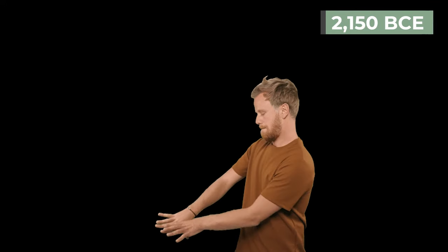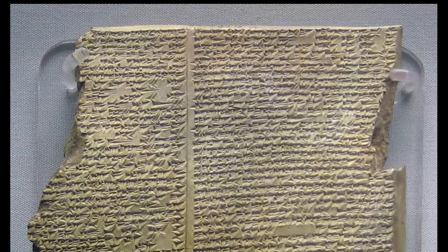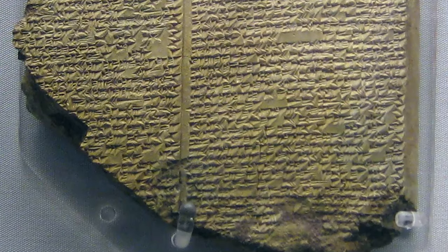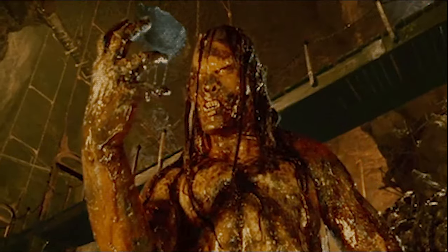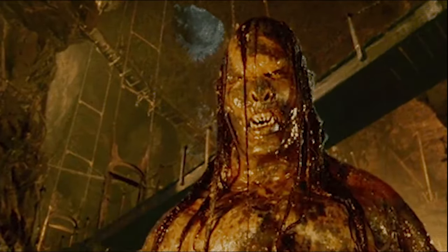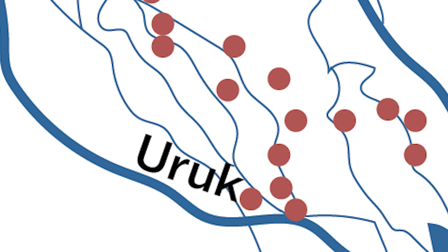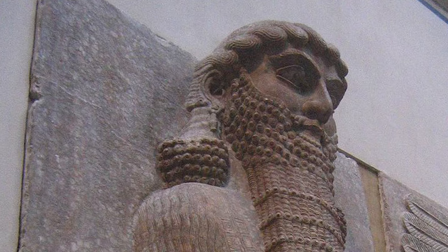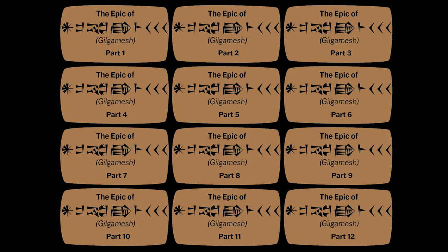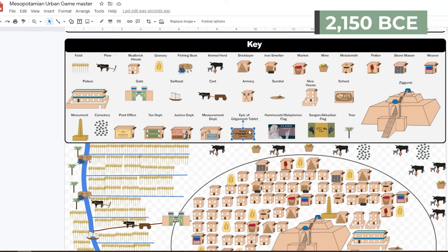It's 2,150 BCE and your town is unveiling its newest accomplishment: the world's first piece of literature, called the Epic of Gilgamesh. The original Gilgamesh was the king of the city-state of Uruk. The tales of his adventures grew, were passed down by oral tradition, and have now been written down as the first piece of epic literature. While there were earlier Sumerian writings, this is the first literary epic masterpiece. Add one Epic of Gilgamesh tablet inside the city.